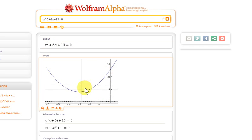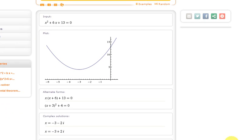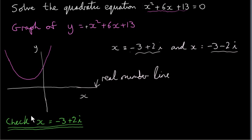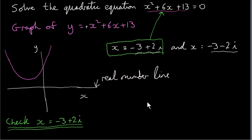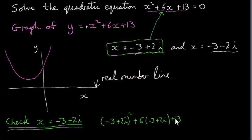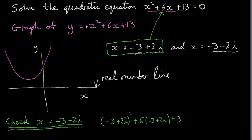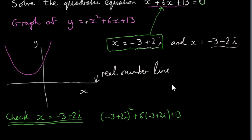Now, what I want to do next is check one of the solutions by plugging it into the quadratic equation. I'm going to check minus 3 plus 2i. That means I replace x with minus 3 plus 2i, giving minus 3 plus 2i squared, plus 6 times minus 3 plus 2i, plus 13. If we work all of this out, we should get 0 — the right-hand side. We could do the same for the other solution, but I'll just do this one.